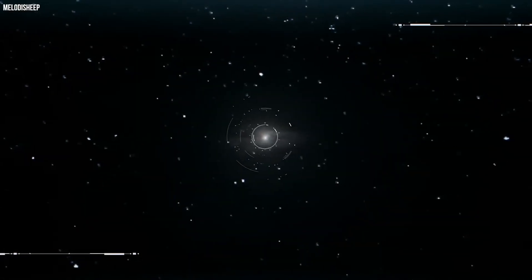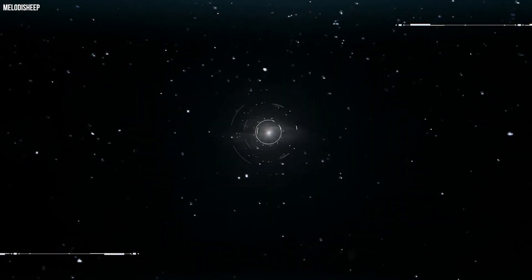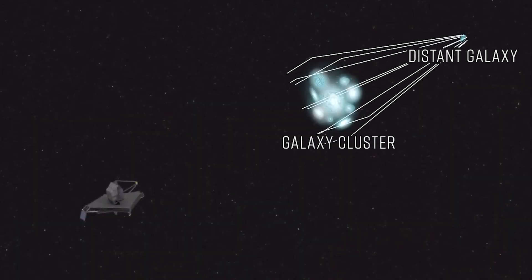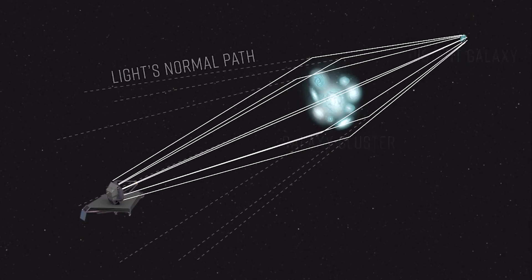In order to answer the questions more definitively, however, the team hopes to take a second look at the sparkler galaxy to collect a more detailed spectrum. Gravitational lensing is the key factor that will help scientists understand the spectrum better.